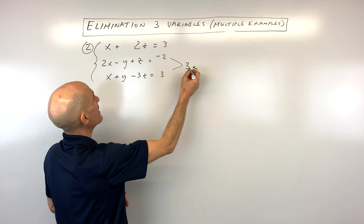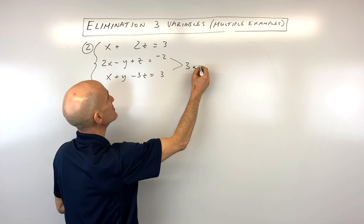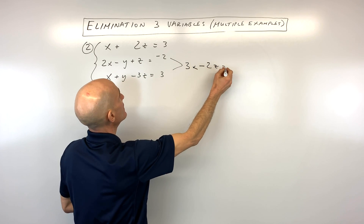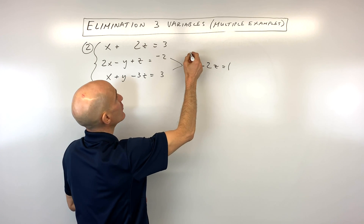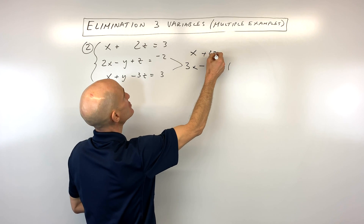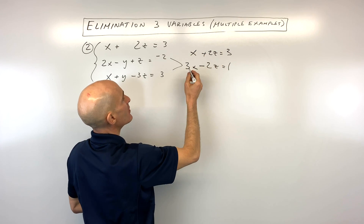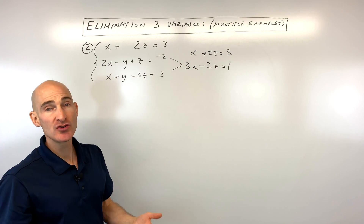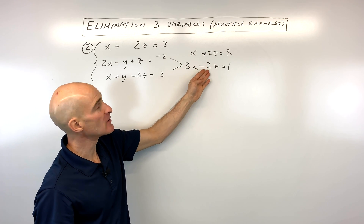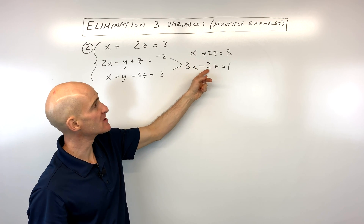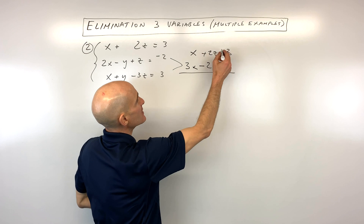2x plus 1x gives us 3x, the y's cancel, 1z plus negative 3z is negative 2z, and negative 2 plus 3 is 1. Bringing the top equation down: x plus 2z equals 3. Now we're down to just two variables and two equations. The z's are going to be a little bit easier since one is positive and one is negative with the same coefficient — we can just add straight down.